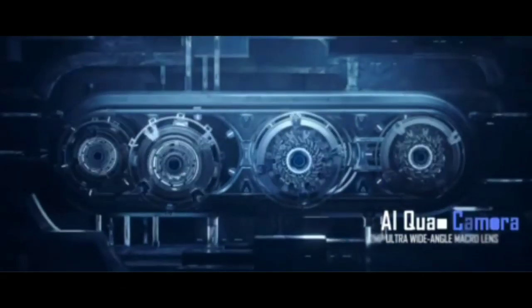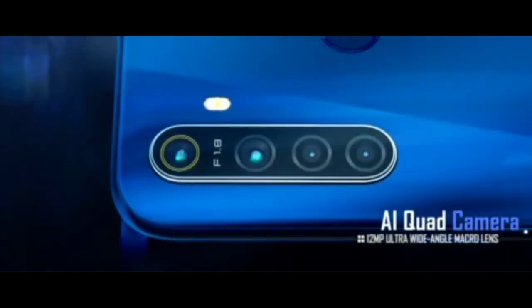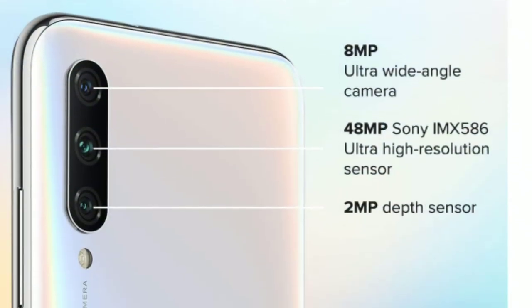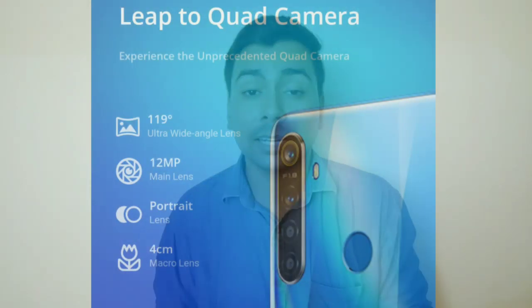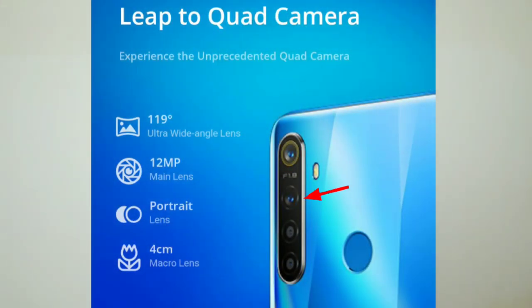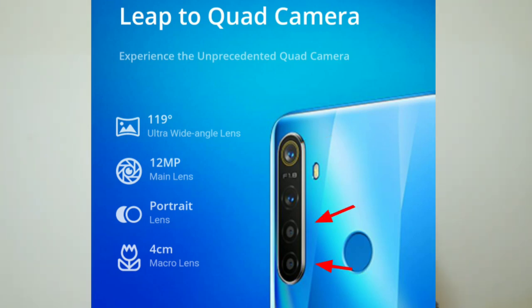Now we come to the main component that causes a lot of discussion — the camera. Realme 5 features a quad-camera setup. The main sensor has an aperture of f/1.8, along with an 8MP ultra-wide camera with f/2.2 aperture, a 2MP macro lens, and a 2MP depth sensor for portrait mode.